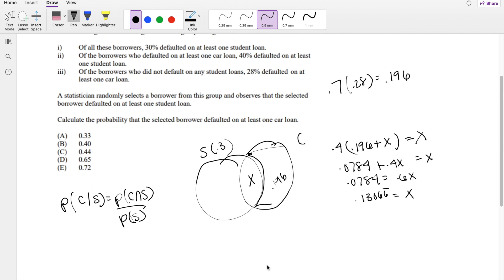So I think we have everything we need because we just need the intersection, right? The intersection we know is X, which we found to be this number right here. So that's 0.13066 repeating divided by the probability of student loans, which is 0.3.